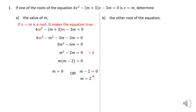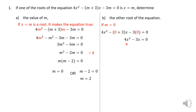Now we are told to find the other root of the equation. What you do is take m = 0 and plug it back into the original equation. Everywhere you have m, substitute 0. When you clean that up, you get 4x² minus 3x equals 0. We are now solving this equation — it's quadratic, so there must be two solutions. Taking out a common factor, x = 0 or x = 3/4. That is when m = 0.